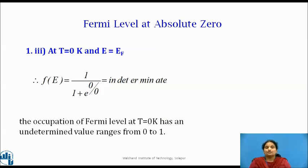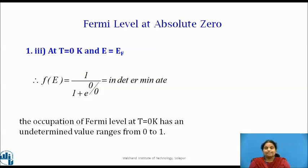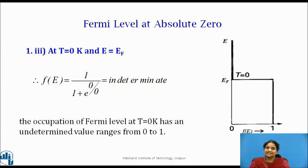Now, for E = E_F, the quantity E − E_F is equal to zero. Therefore, F(E) will be indeterminate. This implies that the occupancy of the Fermi level at zero Kelvin ranges from zero to one. The corresponding energy function is shown in the figure.